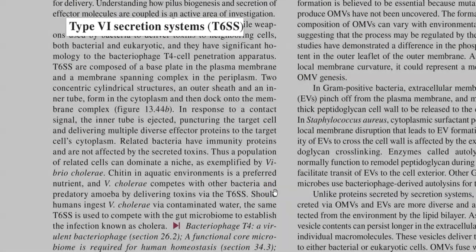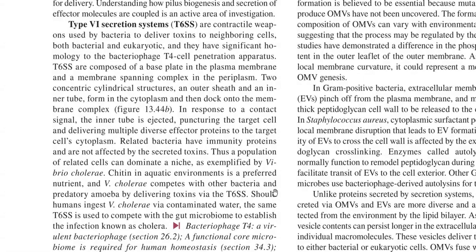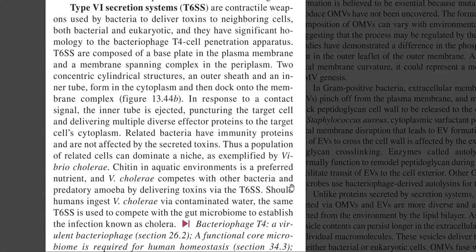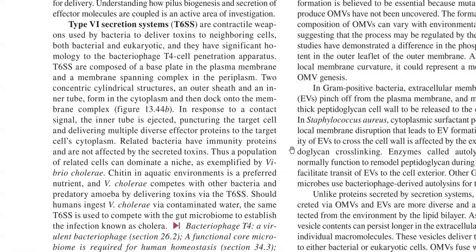The Type 6 secretion system, also referred to as a contractile weapon, is used by bacteria to deliver toxins to nearby cells. It can even be intrabacterial — killing other bacteria — or deliver toxins to eukaryotic cells. The Type 6 system is homologously similar to the bacteriophage T4 cell penetration apparatus, composed of a base plate in the plasma membrane and a membrane-spanning complex in the periplasm. Two concentric cylindrical structures — an outer sheath and an inner tube — form in the cytoplasm and dock into the membrane complex.